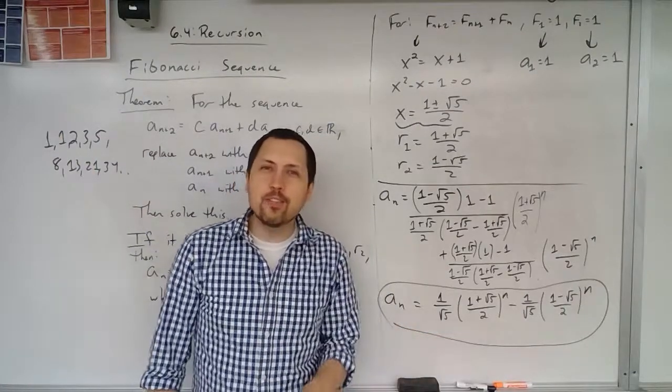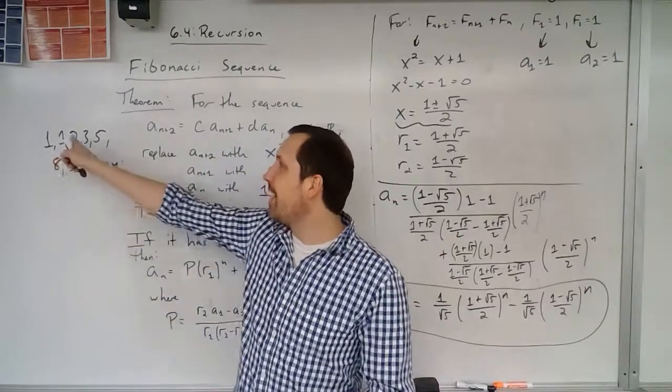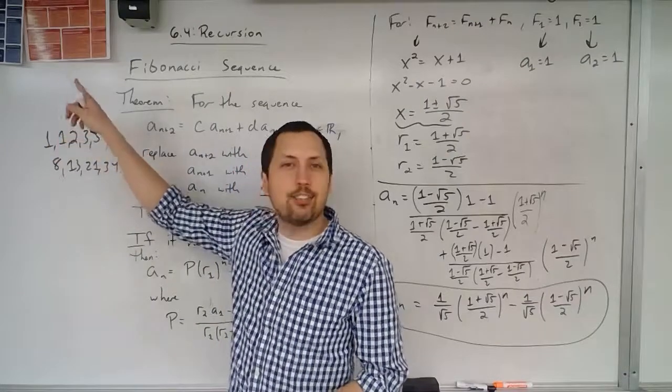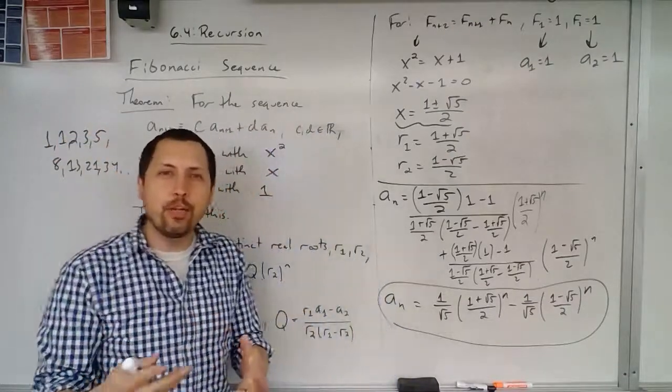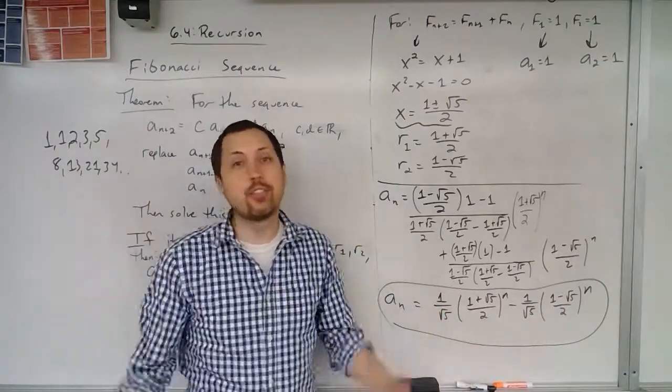But this, how do all of these square root of 5s just poof, gone? Why is this not the sequence of the square root of 5 minus 17 square root of 5 over 3? Why is it not weird numbers? Why does this end up working out to be integers? This is crazy.